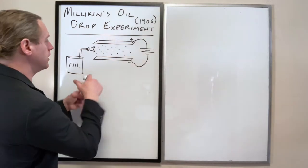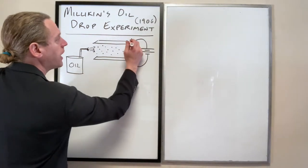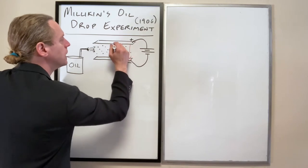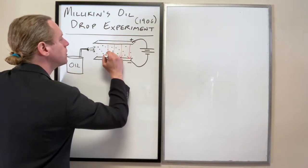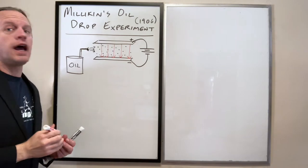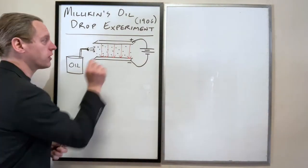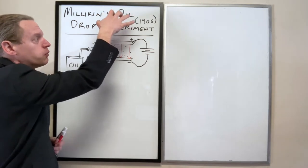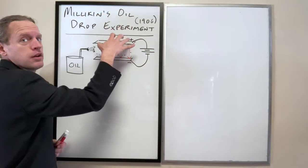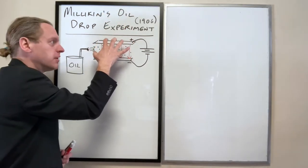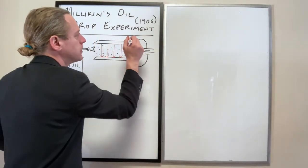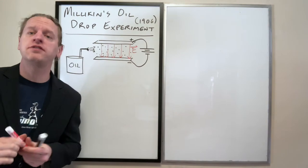But what we do now is we can apply an electric field, and specifically that electric field we're going to induce in a downwards direction. And what we find when we peer through that microscope is that all of a sudden, as they're falling, when we ramp up that electric field there, some of those droplets start to float. And it's important to note, it's only some of them. Not all of them do that.